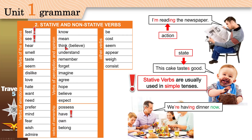Take the verb 'think' as an example. 'I think Barcelona will win the match' — this means you believe Barcelona can win; it's a state. But 'I am thinking about buying a new phone' means you are considering it — you are trying to decide whether you should buy a new phone or not. In that case, use present progressive.